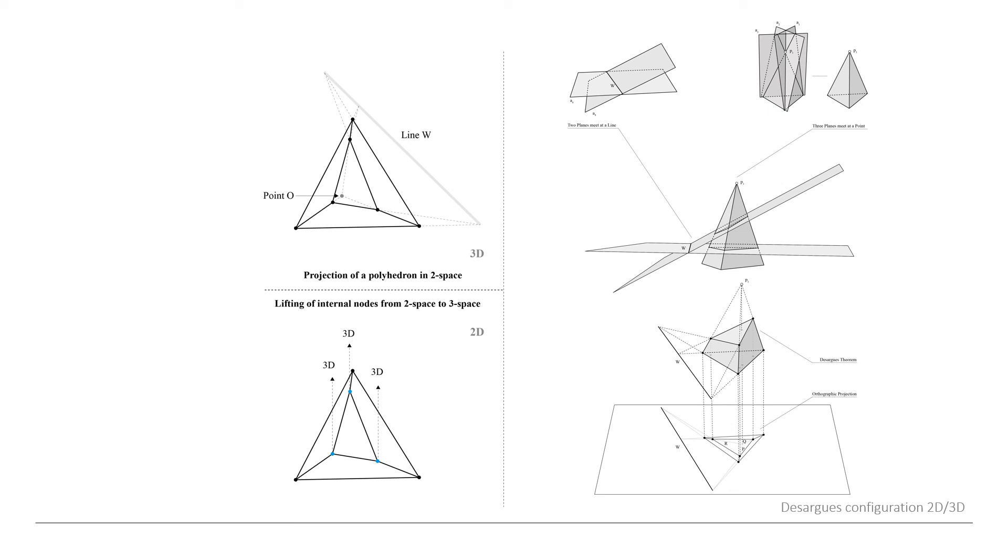Basically if we have a 2D form diagram like the one on the top left, one way to make sure that this is in static equilibrium is for it to be a projection of a polyhedron and thus to be in a Desargues configuration. This means that those radial edges are going to need to intersect in a point, and if not it's not in static equilibrium.